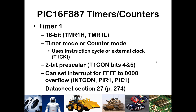Timer 1 is very similar to Timer 0, but it is a 16-bit timer, allowing us to store larger values. The 16 bits are spread across TMR1H and TMR1L — the high and low registers. It can be used in timer mode or counter mode; its external pin is T1CKI. More detail is in datasheet section 27, starting on page 274. It can also have a prescaler, though with fewer options than Timer 0 — only four prescale choices, configured in T1CON bits 4 and 5.